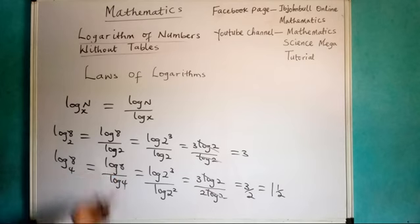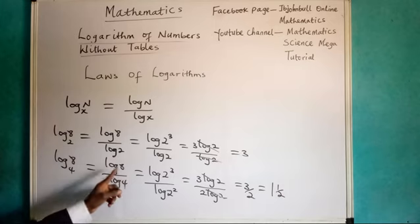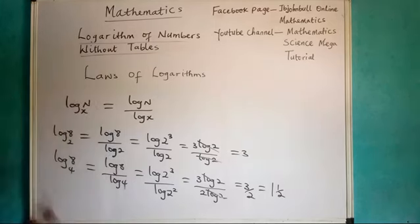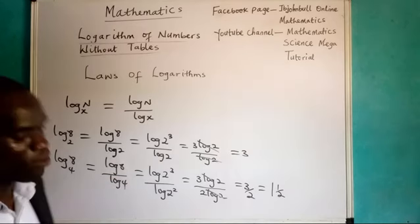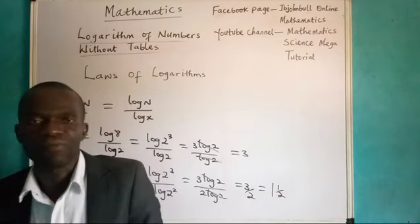But from the calculator, you can have it as 1.5. Log 8 base 4. And from the calculator, you can say log 8 divided by log 4 and you will have 1.5. But you don't have to work with the calculator. This will be your result. This is how to resolve a problem like this under change of base.